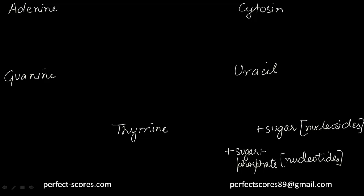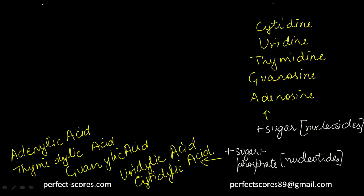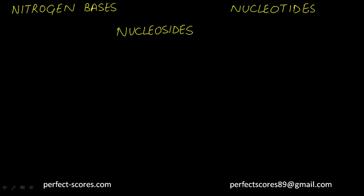Now adenosine, guanosine, thymidine, uridine and cytidine, these are nucleosides. So these are all the nucleosides that are only sugar. And in nucleotides, you can see adenylic acid, thymidylic acid, guanylic acid, uridylic acid and cytidylic acid. So these are the different acids. And let's just go through the structure of these for a bit. So we'll discuss the structures of these three kinds of compounds.